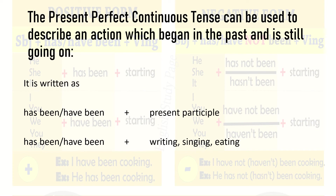It is written as 'has been' or 'have been', and to that we add the present participle. That means to 'has been' or 'have been' we add the verb — the action word — write, sing, eat, dance, and so on, and to that we add '-ing'.